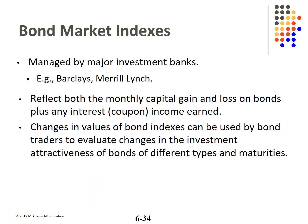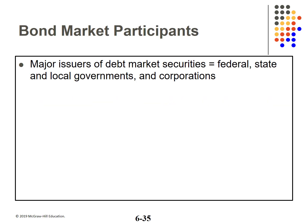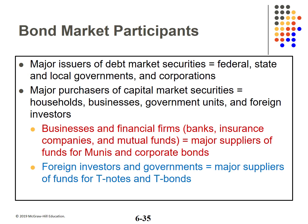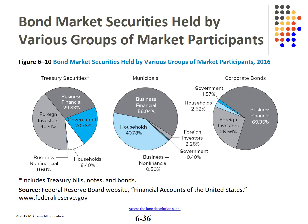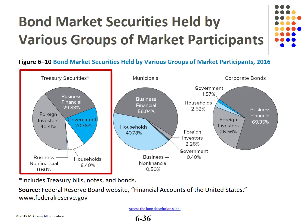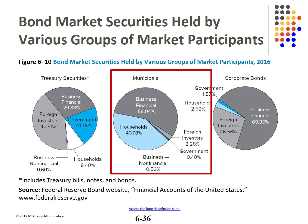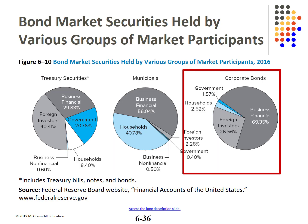Much like the well-known stock indexes, there are several bond indexes, used primarily by bond traders to evaluate various types and maturities of bonds. Bonds are issued by all levels of government as well as corporations, and bought by government units, businesses, individuals, and foreign investors. Munis and corporate bonds are primarily bought by businesses. Treasuries are favored by foreign investors and governments for their safety. Over 40% of treasuries are held by foreign investors as a safe haven. Over 55% of munis are held by businesses, with 40% held by individuals for their tax-exempt status. Corporate bonds are overwhelmingly held by business.